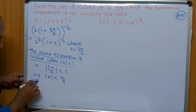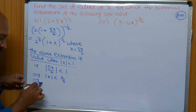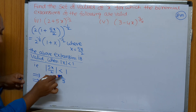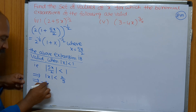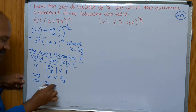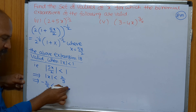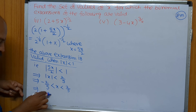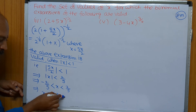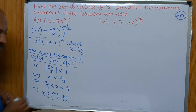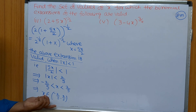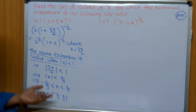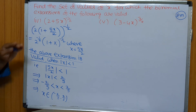The above expansion is valid when mod X is less than 1, that is mod(5x/2) is less than 1. Except x, remaining values bring to this side: mod x is less than 2/5. Removing mod gives plus or minus 2/5, so minus 2/5 is less than x is less than 2/5. That can be written as x belongs to the open interval (−2/5, 2/5). In this interval the given expansion is valid.